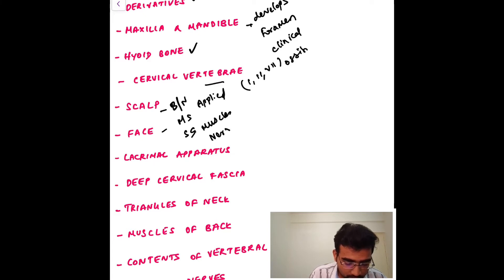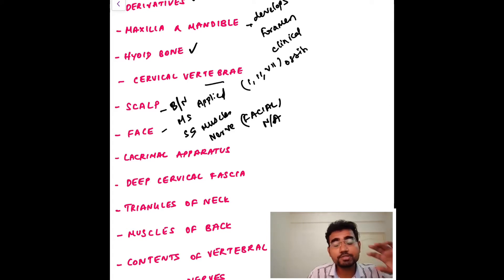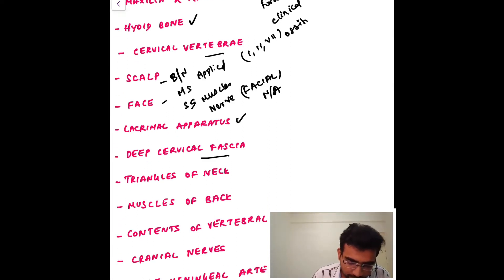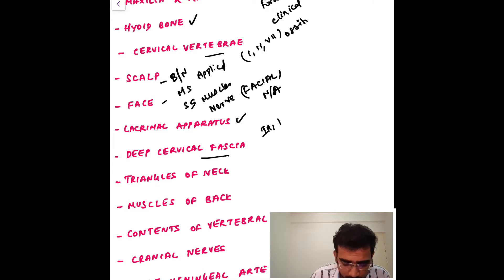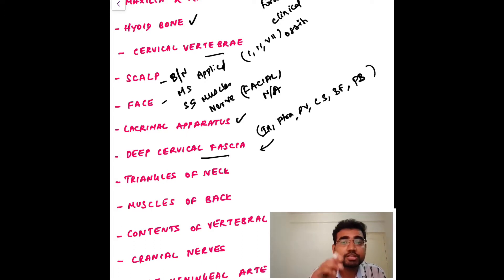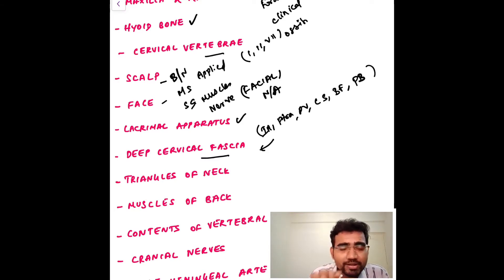For the face, especially the facial nerve and its arterial supply, you need to get into depth — the facial muscles and each muscle's particular function. You should also study the lacrimal apparatus and the deep cervical fascia, which includes the investing layer, the pre-tracheal layer, the pre-vertebral layer, the carotid sheath, the buccopharyngeal fascia, and the pharyngobasilar fascia.